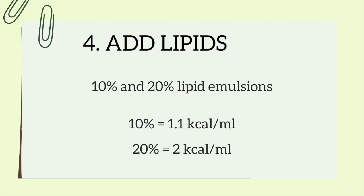Now let's talk about lipids. You usually have the option to add lipids or not. I recommend adding lipids unless the patient's triglycerides are elevated or they aren't tolerating lipids for another reason. IV lipids come in bottles of 10% and 20% emulsions. The 10% emulsion contains 1.1 kcals per milliliter and the 20% emulsion contains 2 kcals per milliliter. For example, 250 milliliters of a 20% lipid emulsion gives 500 kcals, and 250 milliliters of a 10% emulsion gives 275 kcals.